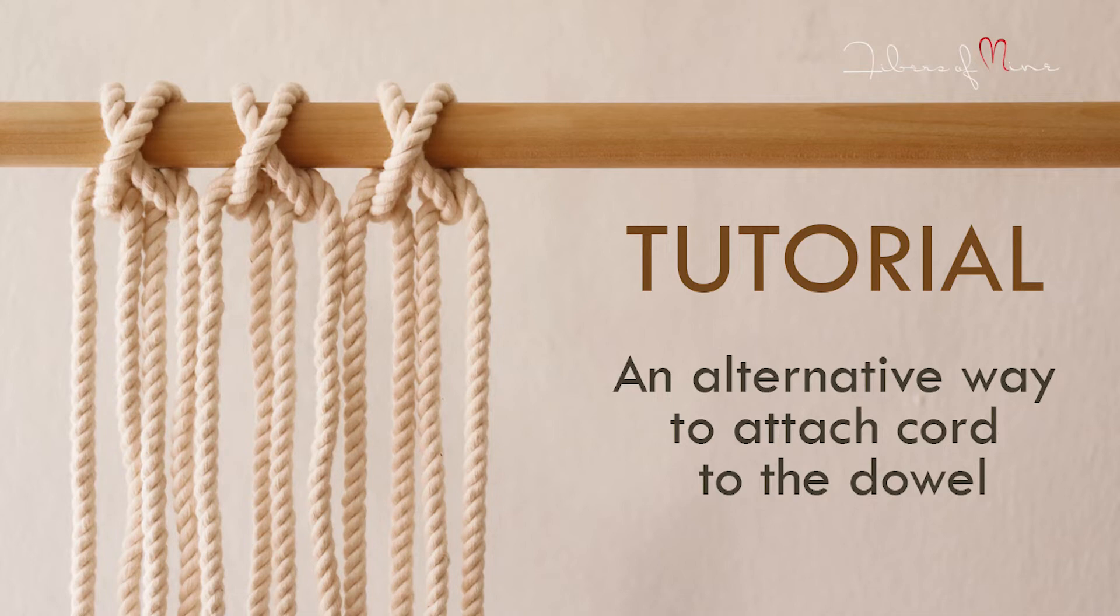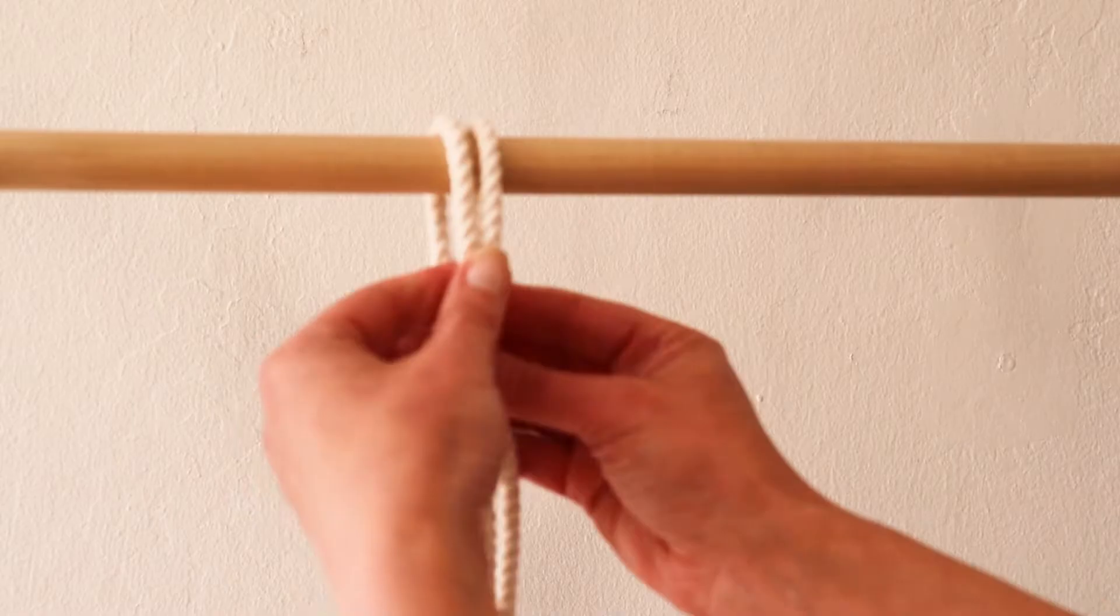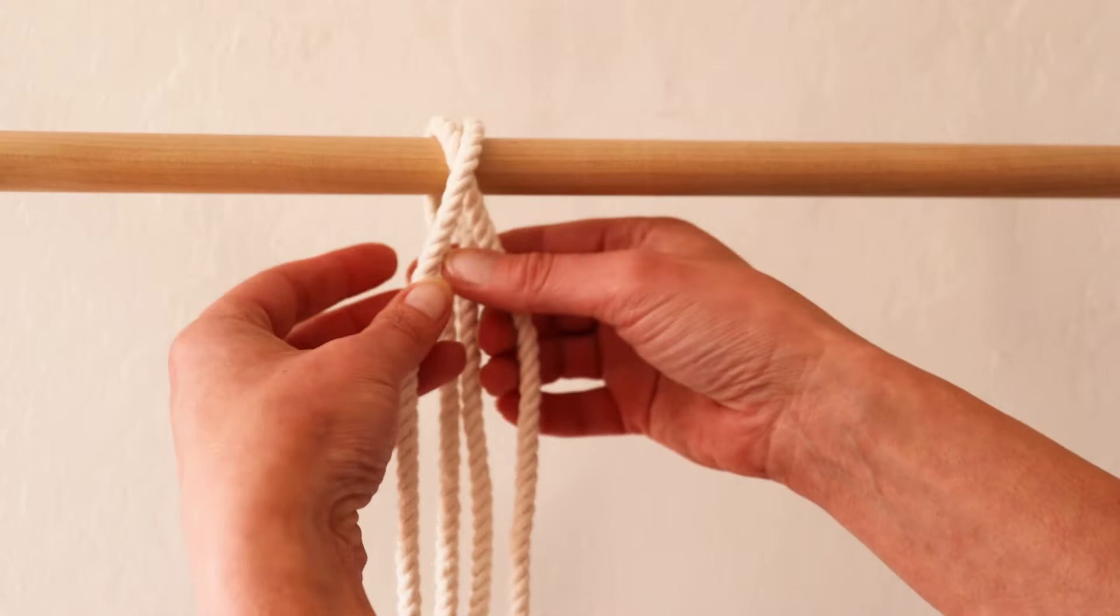Hello there beautiful people, this is Sasha with Fibers of Mine. Today I will show you how to make this crisscross alternative way to attach your cord to the dowel. Take your cords, fold them in half, and hang them over the dowel.